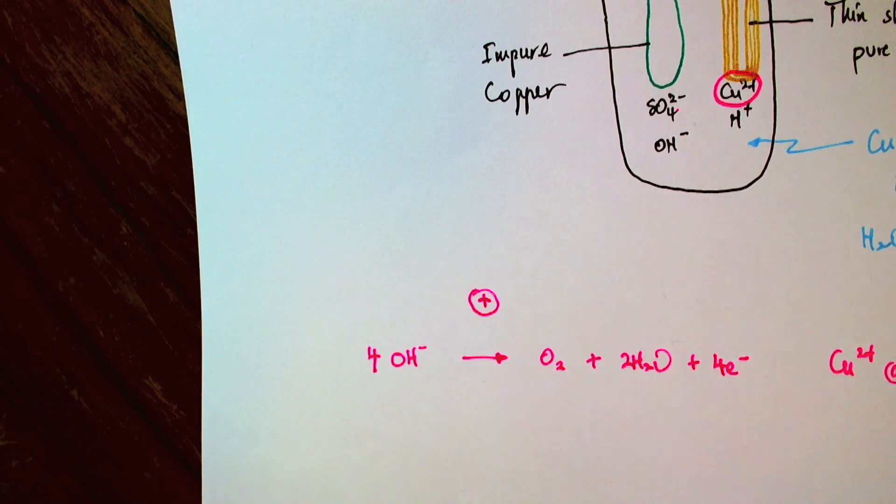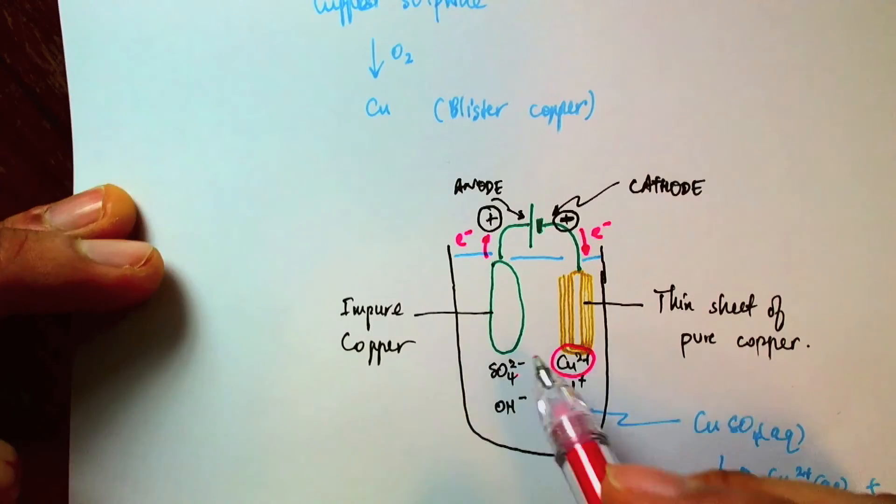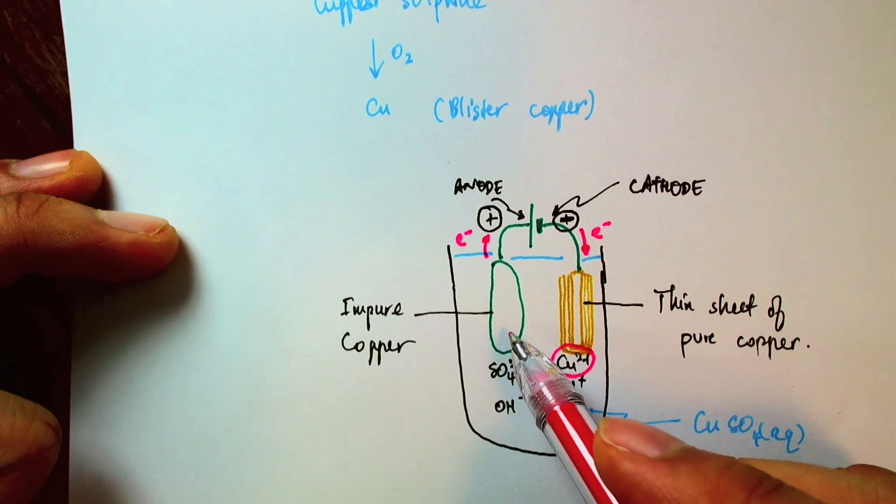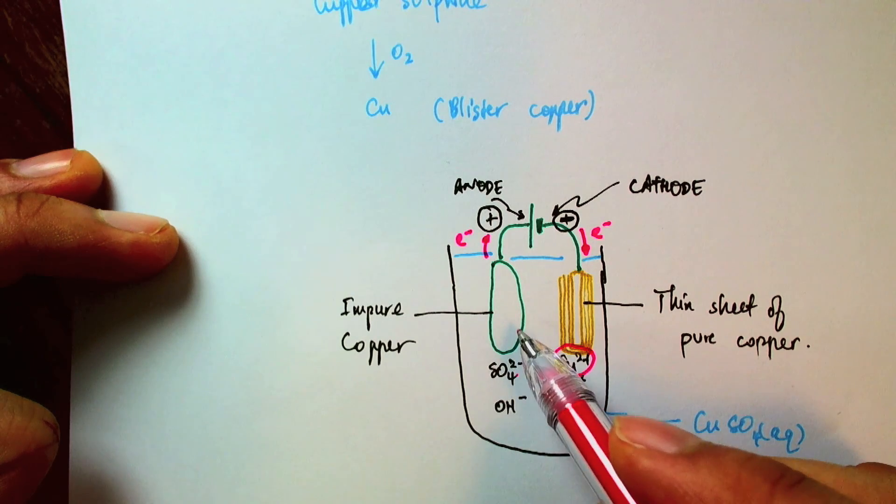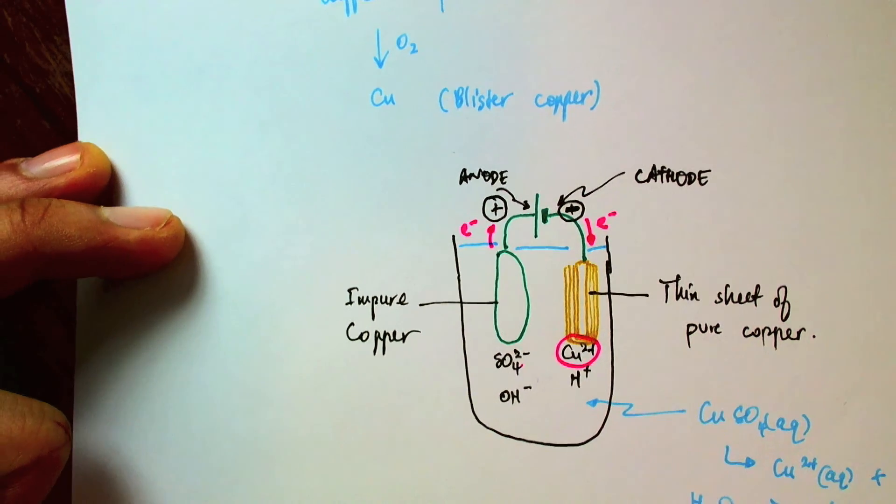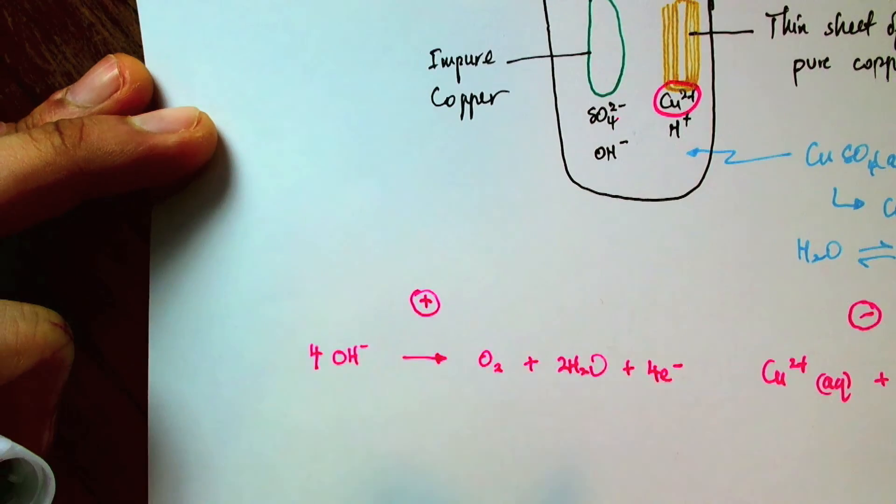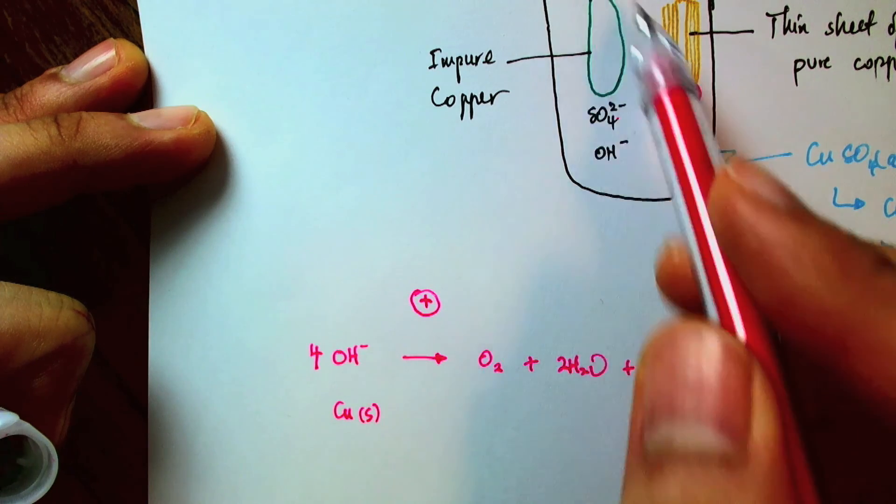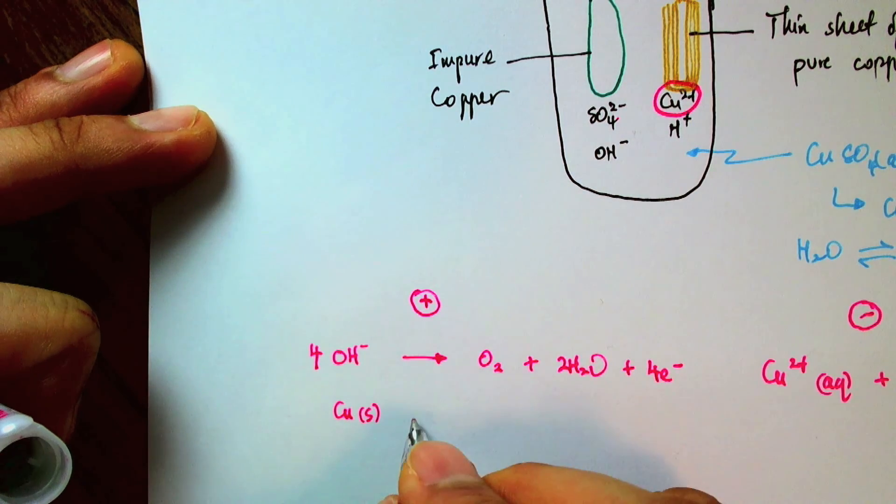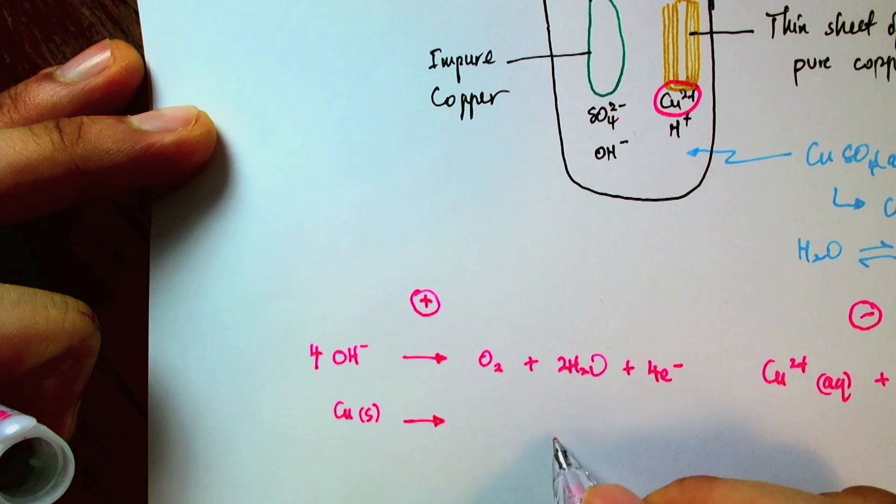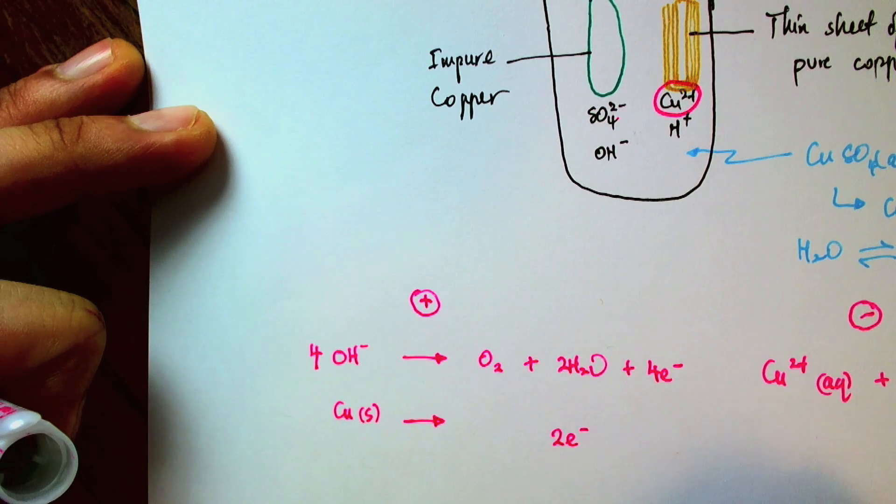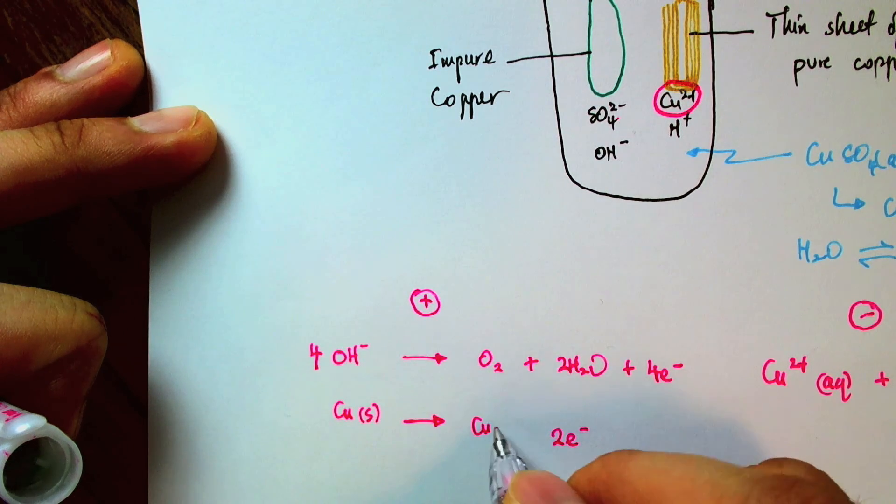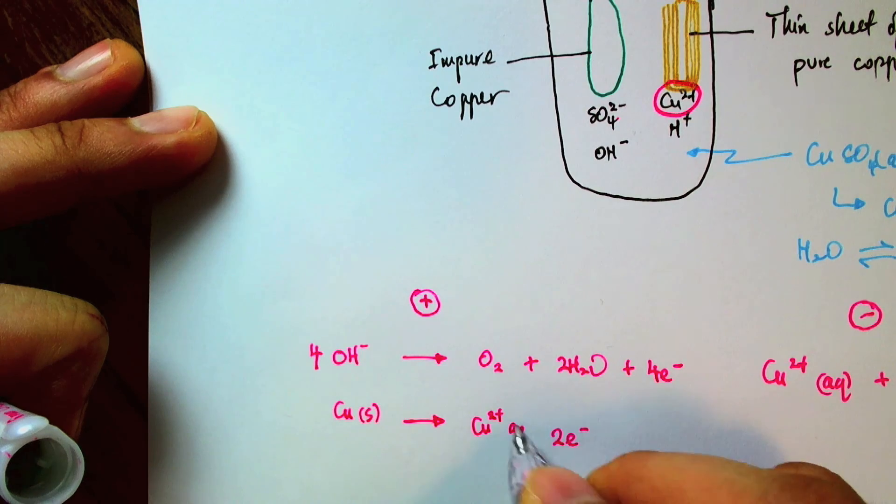The other possibility is that since the electrode is now no longer inert, it can actually dissolve in a solution. So I can get a situation where the copper, the solid copper from this block of impure copper will give up its electrons, two of its electrons in fact, to form a copper ion.